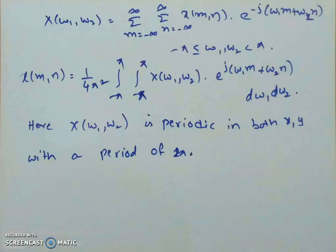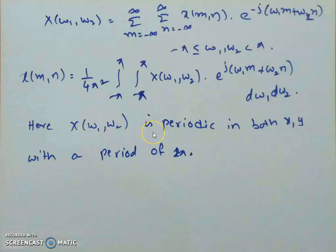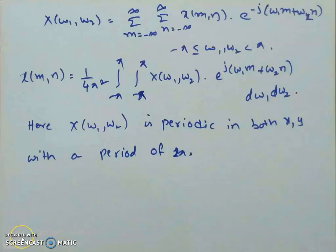The inverse 2D DTFT is x(m,n) = (1/4π²)·∫₋π^π ∫₋π^π X(ω₁,ω₂)·e^(j(ω₁m + ω₂n)) dω₁ dω₂. The 1/4π² factor appears here because we use spatial radial frequencies ω₁, ω₂, unlike the CT case where we used spatial frequencies ζ₁, ζ₂. Another important difference: F(ζ₁,ζ₂) in the CT case need not be periodic, but X(ω₁,ω₂) here is periodic, repeating itself after every 2π — so X(ω₁,ω₂) is periodic in both ω₁ and ω₂ with period 2π.